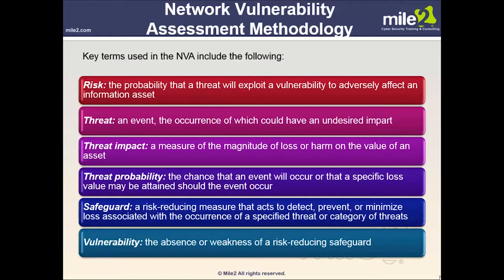Key terms within the network vulnerability assessment methodology include: risk — the probability that a threat will exploit a vulnerability to adversely affect an information asset; threat — an event whose occurrence could have an undesired impact; threat impact — the magnitude of loss on the value of an asset; threat probability — the chance an event will occur; safeguard — a risk-reducing measure that detects, prevents, or minimizes loss; and vulnerability — the absence or weakness of a risk-reducing safeguard.